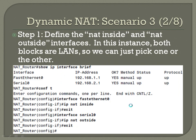Step one: we need to define the NAT inside and NAT outside interfaces as always. In this instance, both blocks are LANs, so we can pick one or the other. On the router, one is on a serial interface and the other on FastEthernet, so the serial will be set as outside. So: interface FastEthernet0 — IP NAT inside — exit. Interface Serial0 — IP NAT outside.